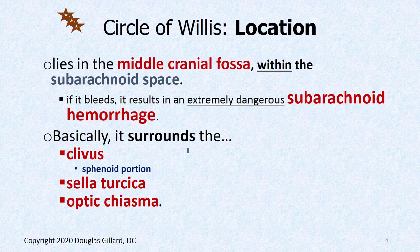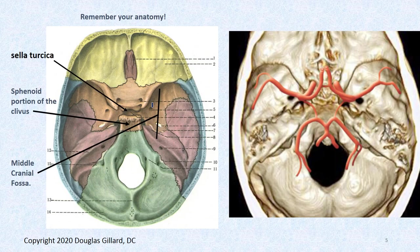The circle of Willis surrounds several structures — osseous structures: the clivus, the sphenoid portion of the clivus, the sella turcica, and the optic chiasma. The sella turcica is that bony little saddle where the pituitary sits. The anterior clinoid processes kind of support it, and the optic chiasma also sits right in the middle of this, as we'll see in a little while.